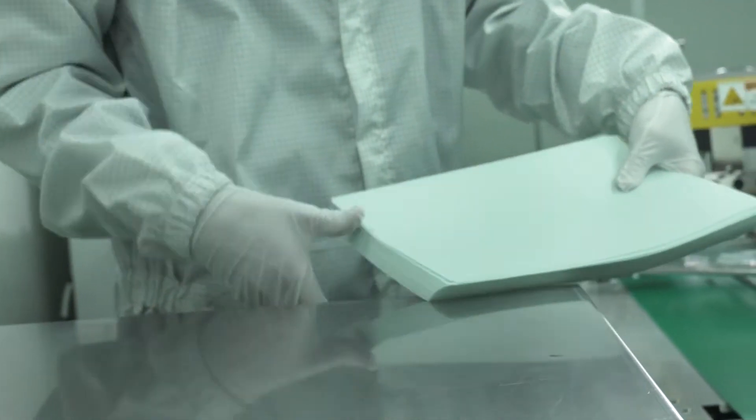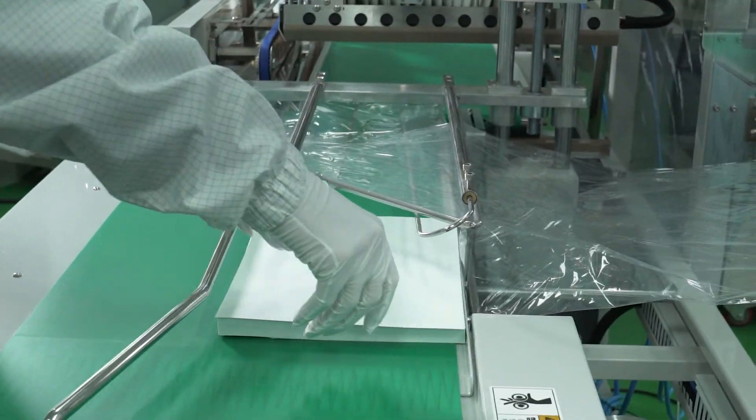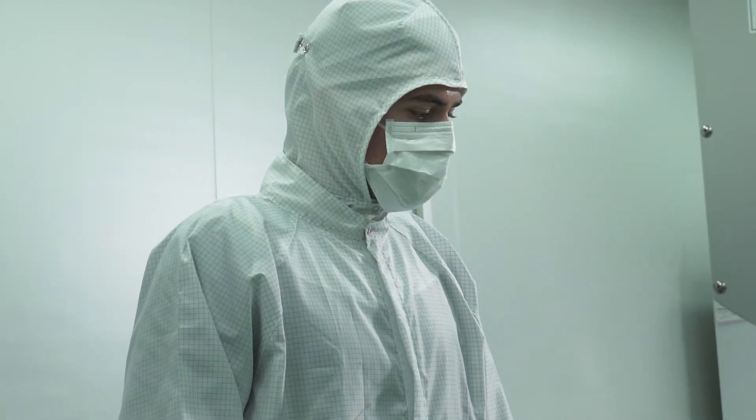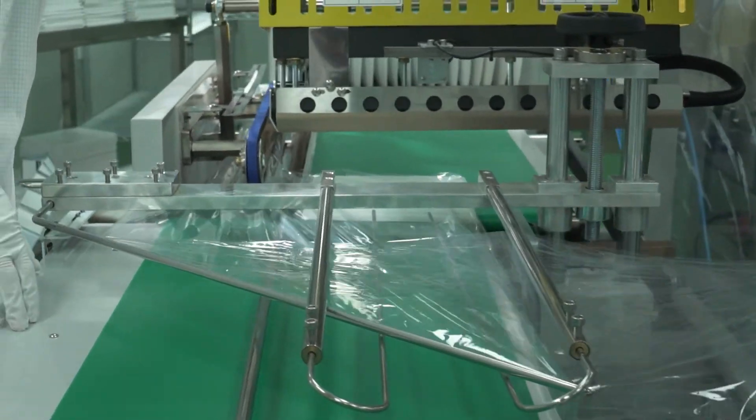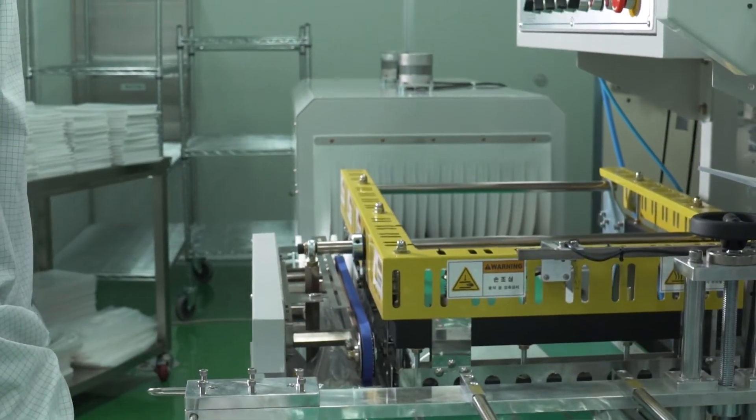When producing products that require the suppression of particle generation such as cleanroom paper, the particle control of the cleanroom paper itself is important, but various products should be used to minimize particle generation during the production process.